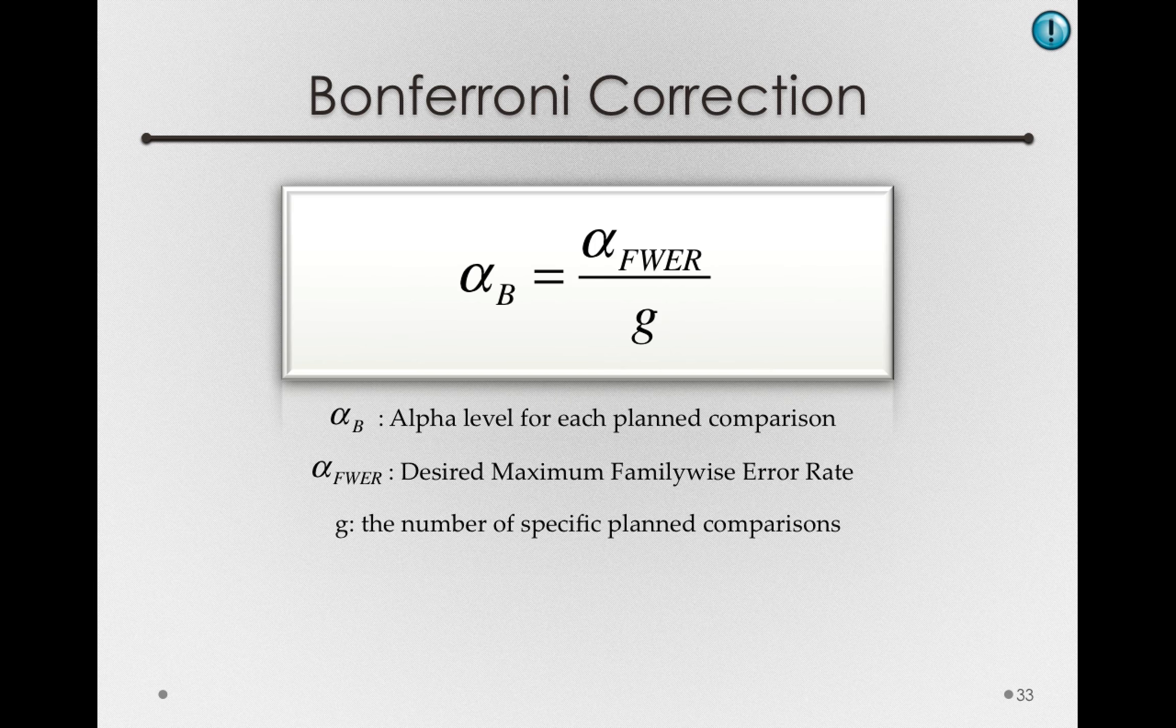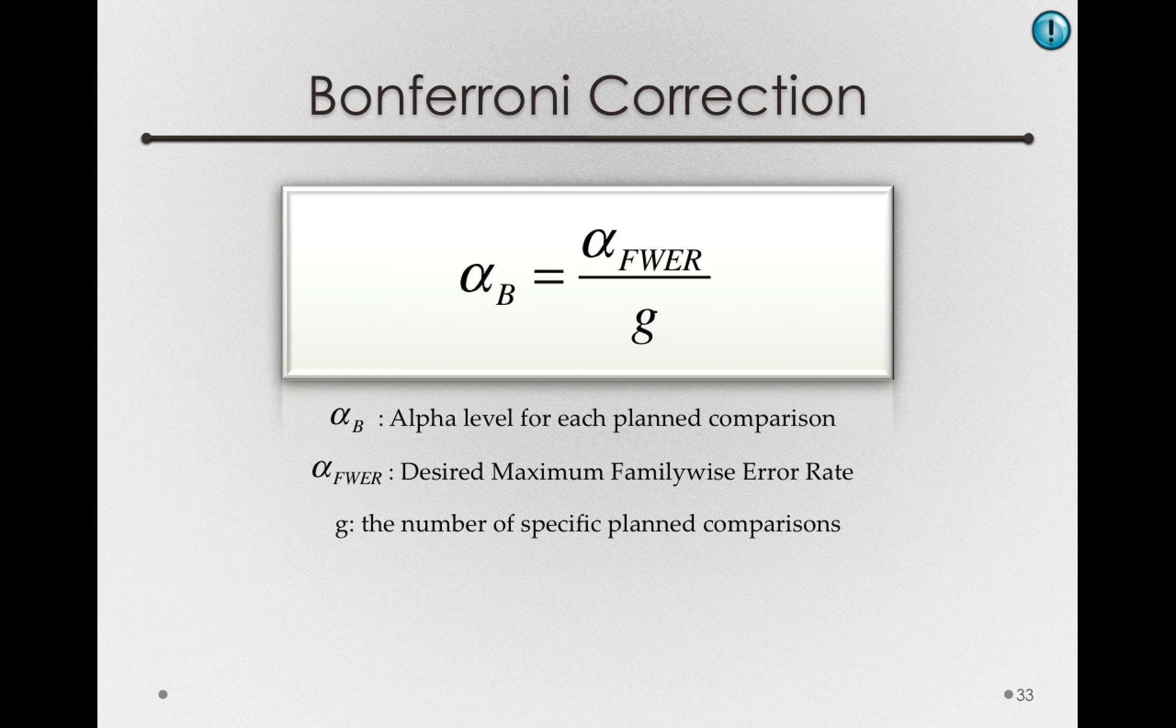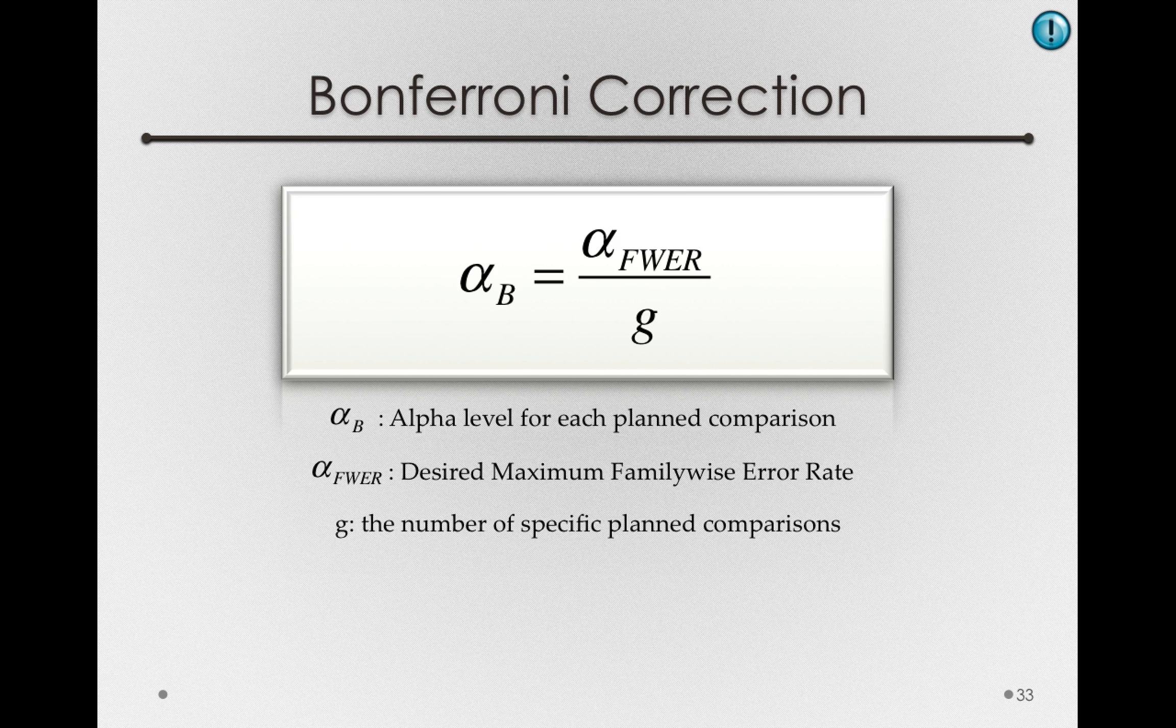So the Bonferroni correction is as simple as taking the overall family-wise error rate you want to achieve, let's say it's 0.05, and dividing it by the number of planned comparisons you plan to make. In this case, let's imagine that is 5. So if you have an overall alpha of 0.05 that you want to maintain, and you know you're going to be making 5 specific comparisons, then the alpha that you'll compare each comparison to will be 0.01. I found that simply by taking 0.05 divided by 5.